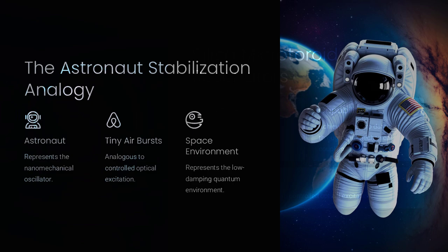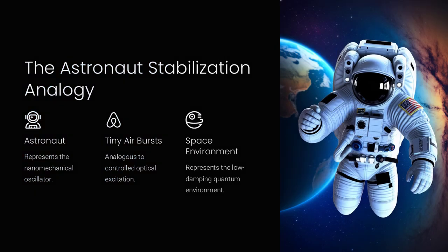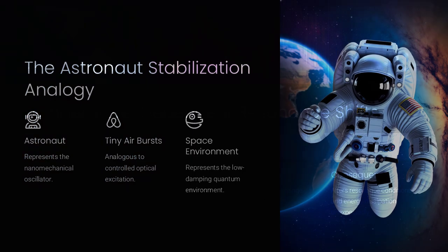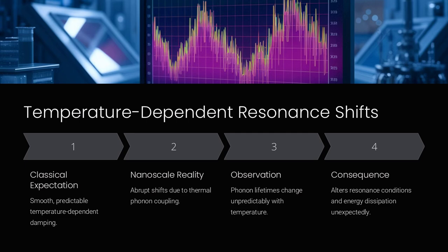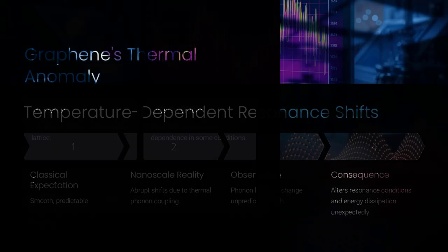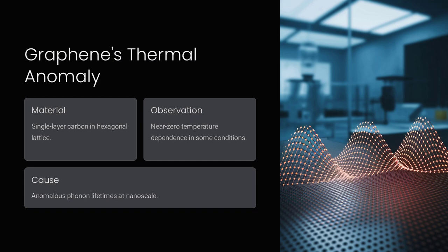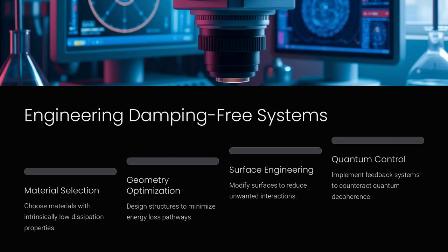Some studies suggest that this could be linked to hidden symmetry breaking effects or even quantum back action, where measurement itself disturbs the oscillatory motion in unexpected ways. Could understanding these anomalies help us design lossless nanomechanical circuits or quantum sensors with unprecedented sensitivity?